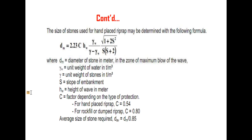In the formula, dm is the diameter of stones for hand-placed riprap in the zone of maximum action of the wave. γw is the unit weight of water in tons per cubic meter. S is the slope of the embankment. hw is the height of wave in meters. C is a factor depending on the type of protection: for hand-placed riprap, C = 0.54; for dry-dumped or rock-fill riprap, C = 0.8. The average size of stones required is: dm(average) = dm / 0.85.